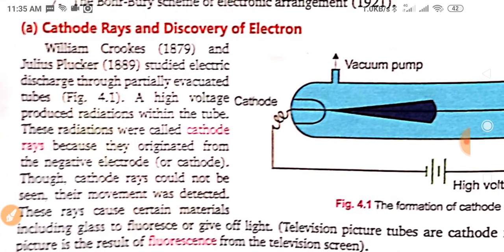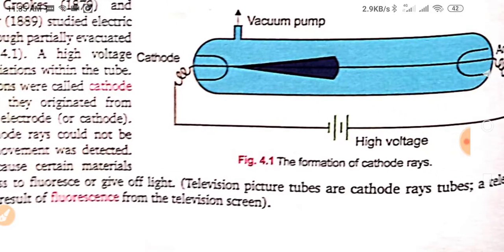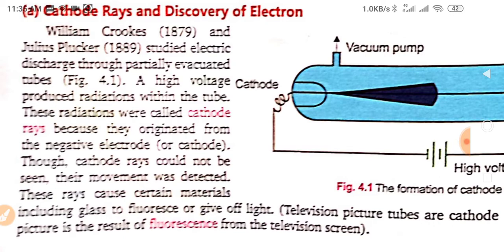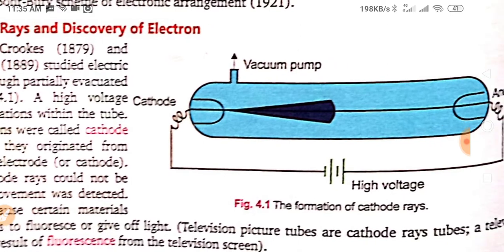Now we discuss about cathode rays and discovery of electron, that how electrons were discovered. William Crookes, 1879 and Julius Plucker, 1889 studied electron discharges through partially evacuated tube. You can see in figure also, this is a partially evacuated tube and a high voltage produced radiation within the tube. These radiations were called cathode rays because they originated from the negative electrode or cathode. You can see it is negatively charged cathode and these rays are known as cathode rays.